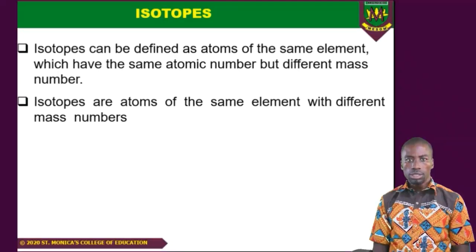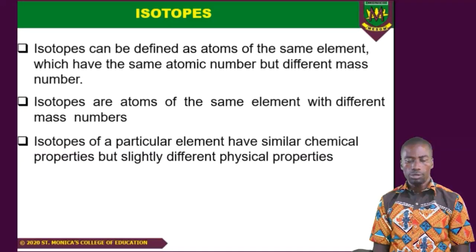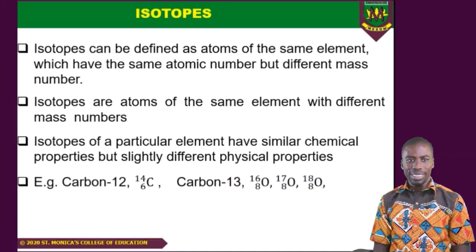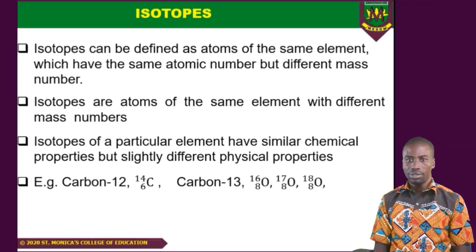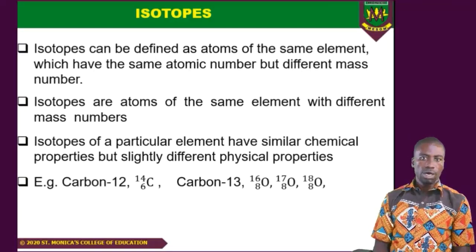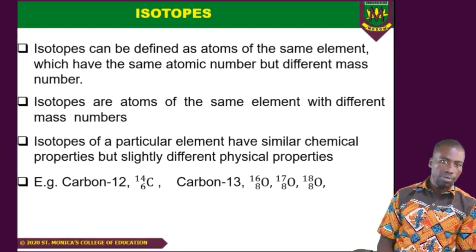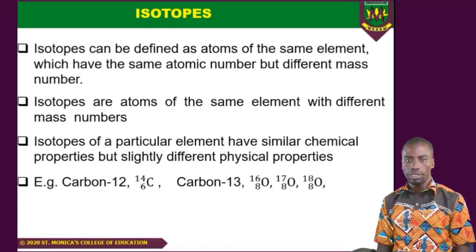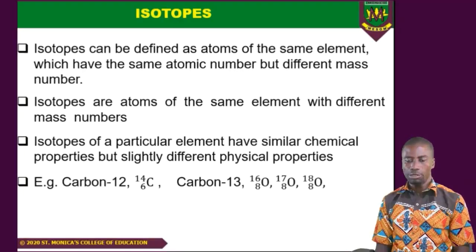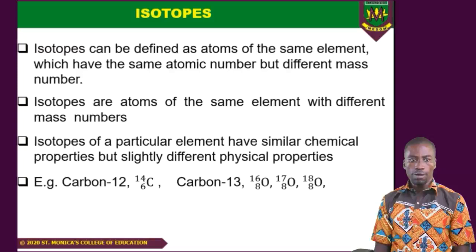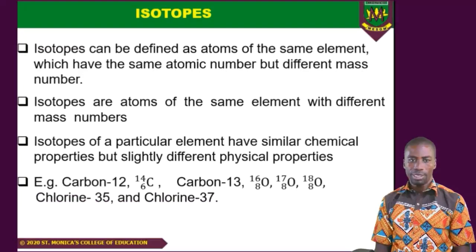As examples: we have Carbon-12, Carbon-13, and Carbon-14 — all isotopes of carbon. We have Oxygen-16, Oxygen-17, and Oxygen-18 — isotopes of oxygen. We also have Chlorine-35 and Chlorine-37 — isotopes of chlorine.